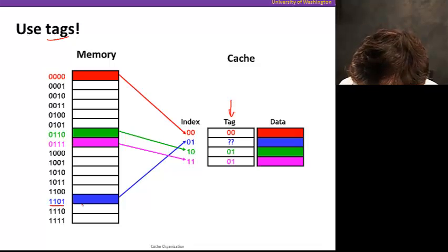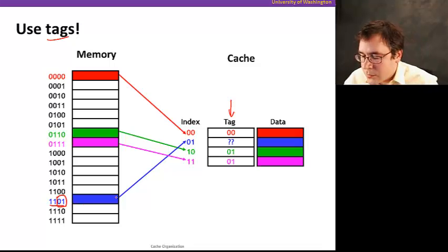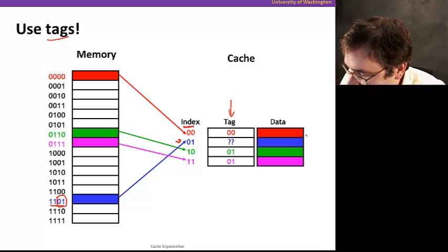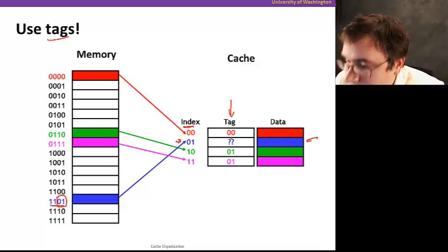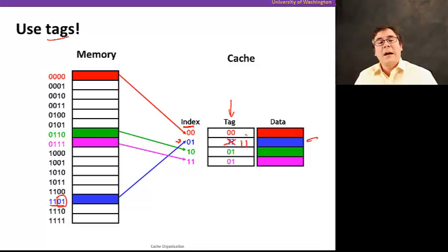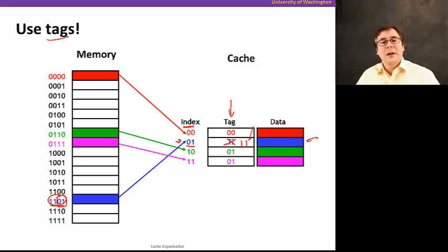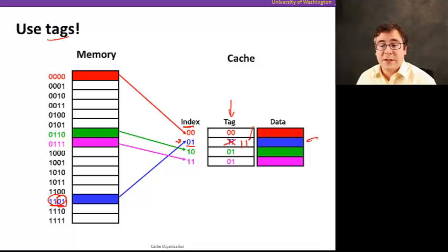We're going to use something called tags. Tags are another storage element in the cache — there will be one tag per data location in the cache that tells what address is stored there. For example, say address 1101: based on the low-order two bits, we know it goes into a specific index. We store tag 11 alongside it. Now the tag together with the index tells us exactly which address is stored in the cache — no more confusion from multiple memory addresses mapping to the same cache position.